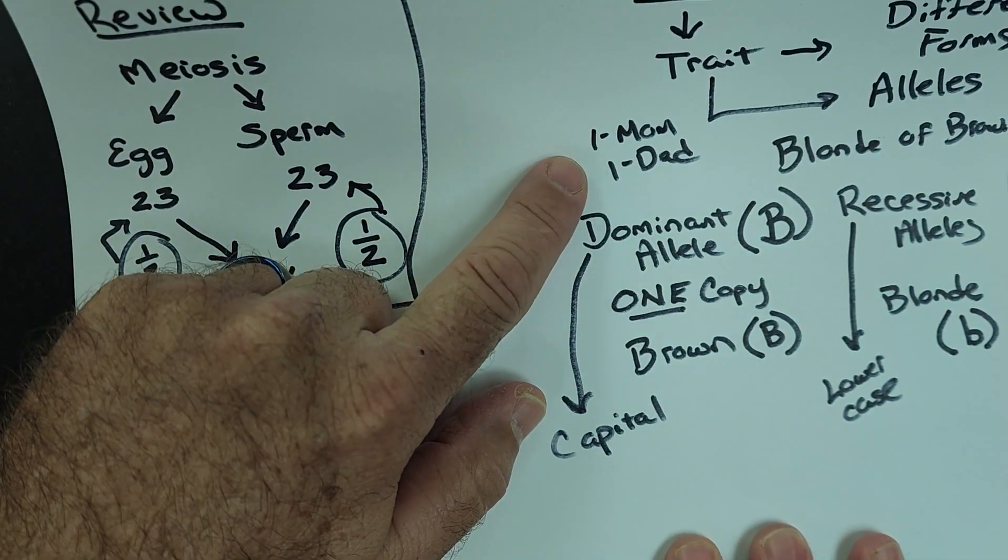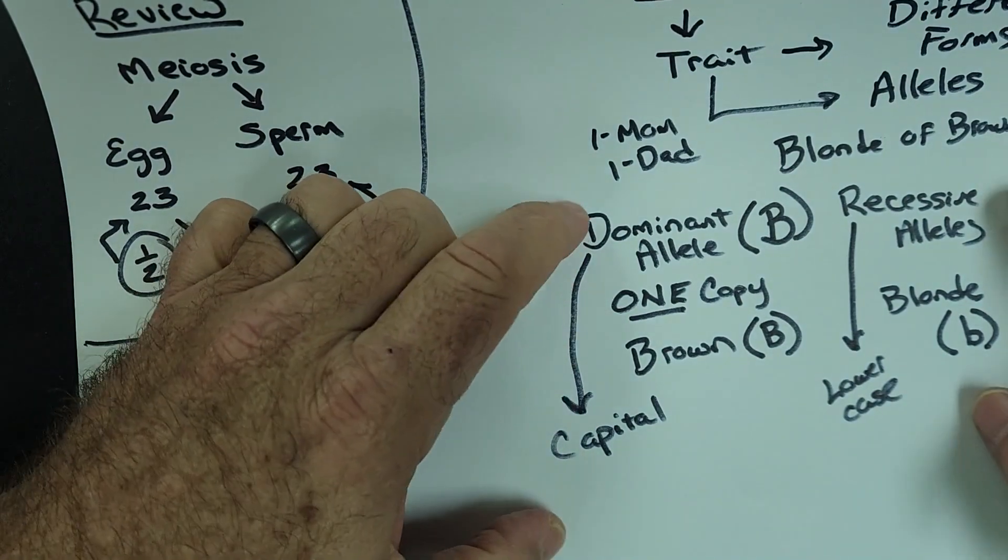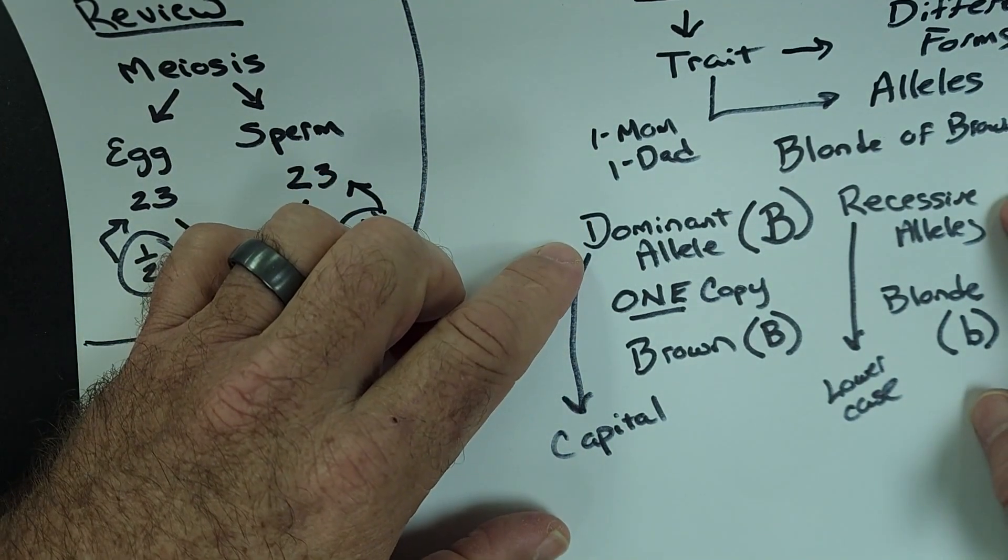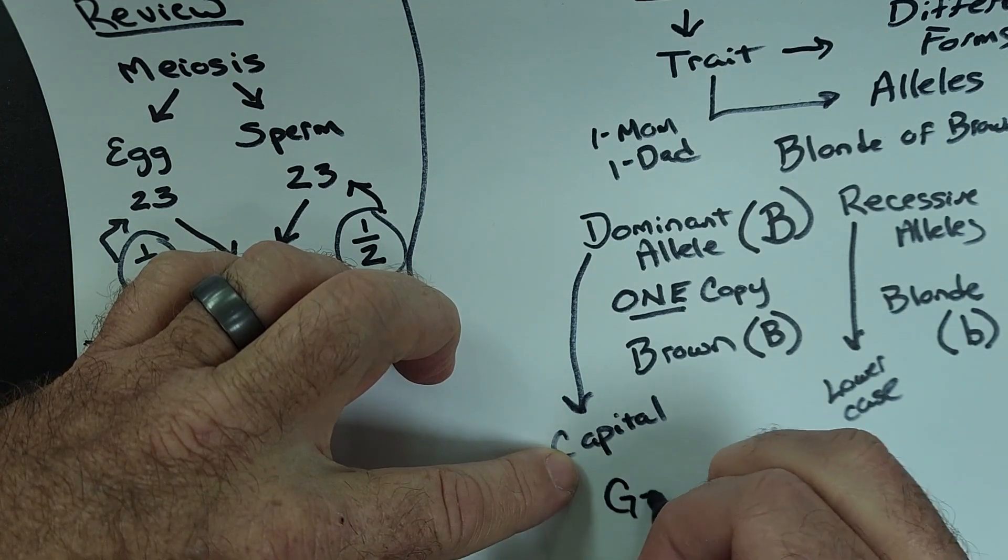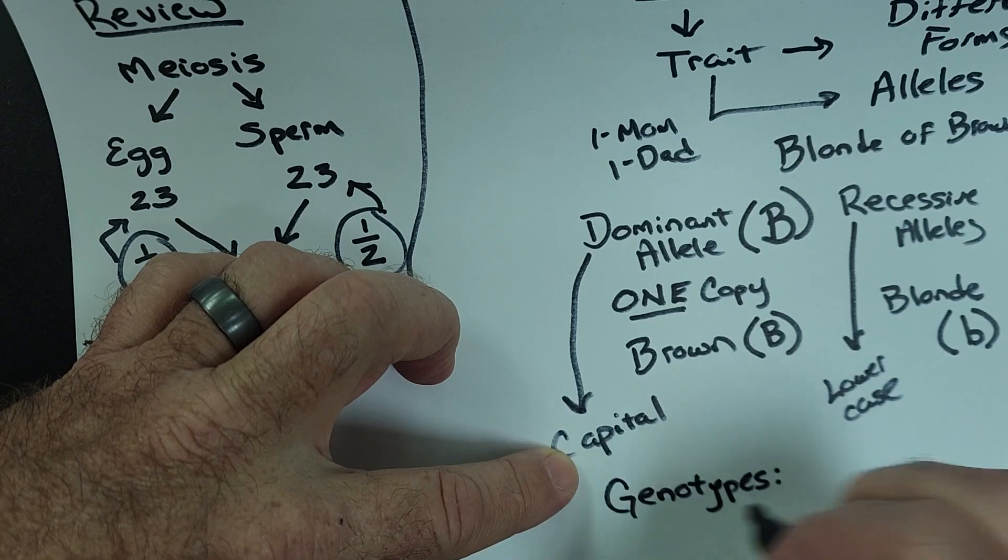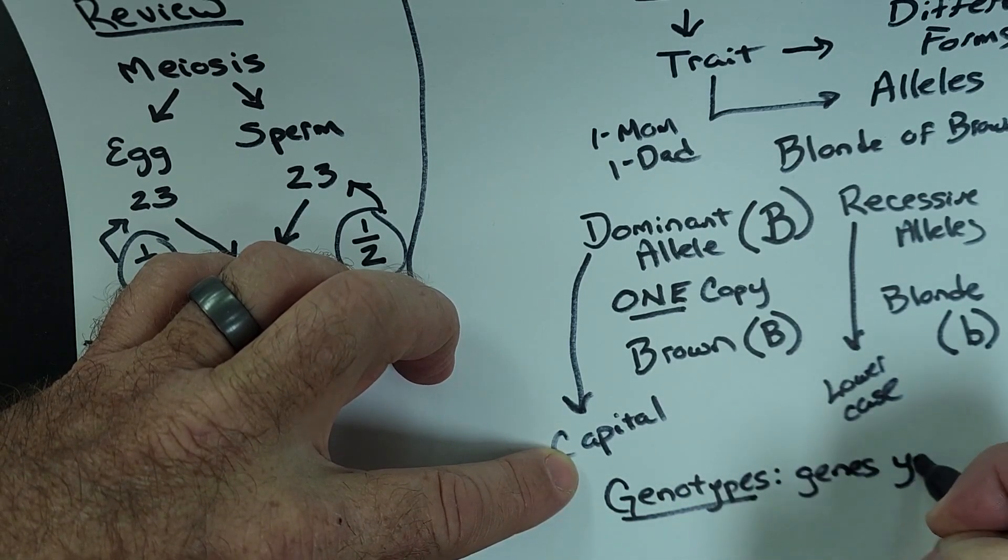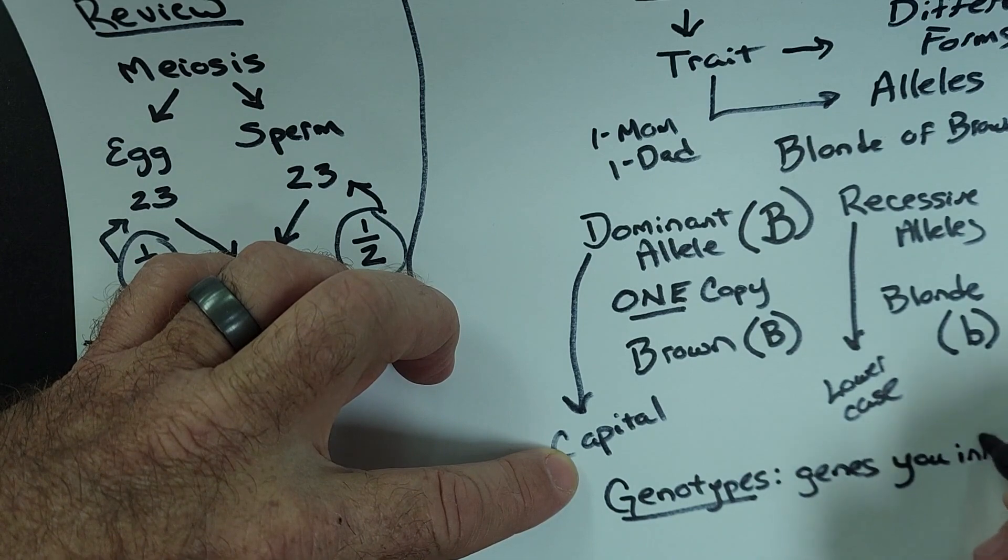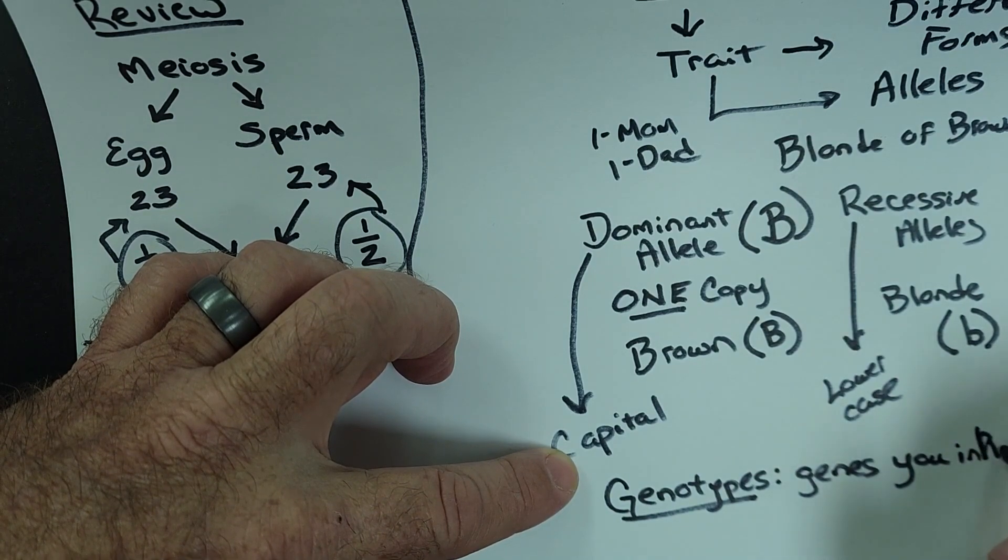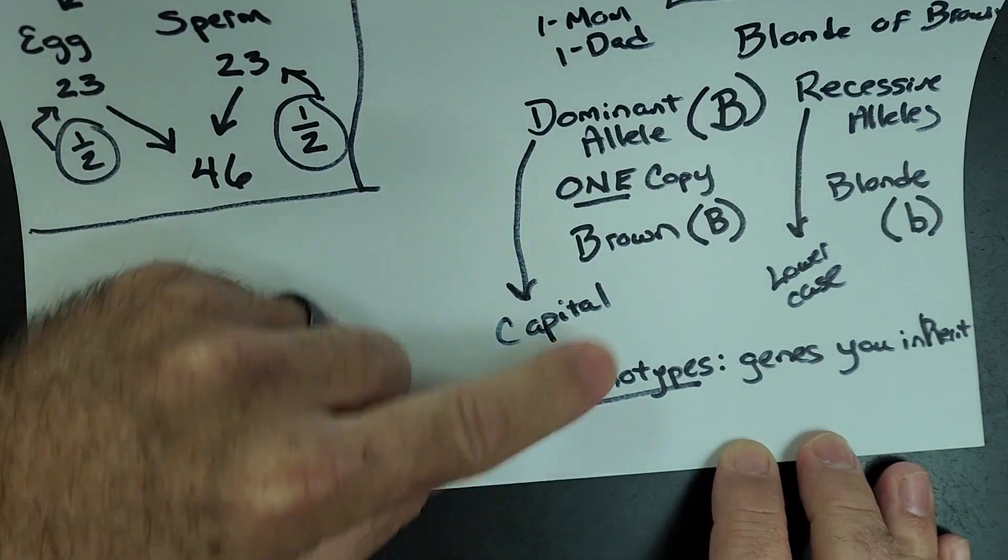And remember, again, you get one copy from mom and one copy from dad. So the possible genotypes, genotypes are the types of genes. They are the genes you inherit. The genes you inherit, the possible genotypes.